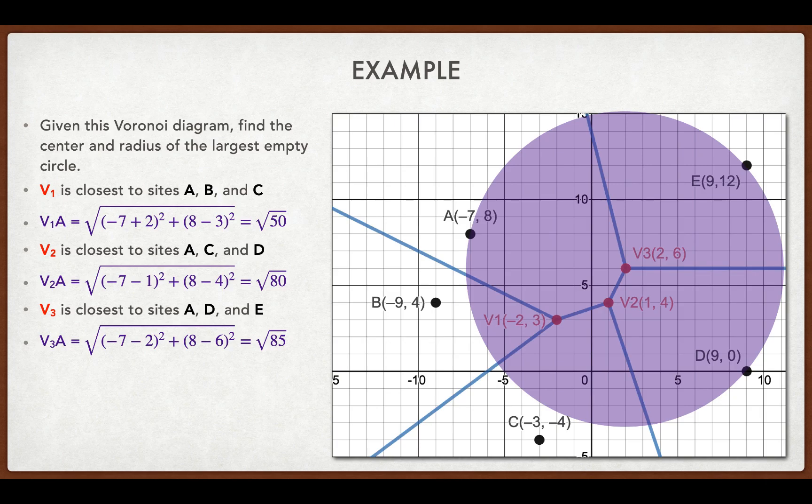So basically, I look at all of those distances and I want that distance to be as big as possible. So the biggest distance there is the square root of 85. So it looks like vertex 3 is my best option.